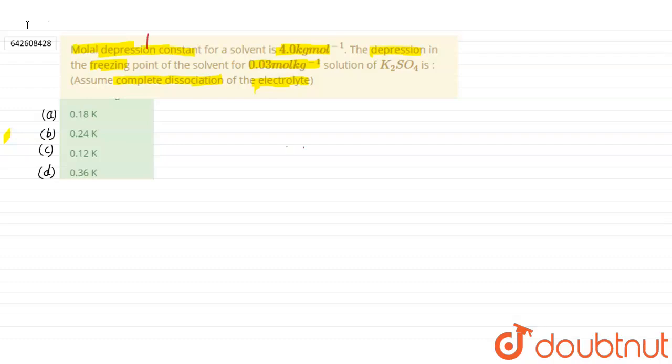We have molar depression constant Kf here and also we have molality of the solution. What things are given? Molal depression constant Kf is equal to 4.0 Kelvin kilogram mole inverse and we have molality of the solution 0.03 mole kilogram inverse.